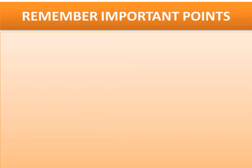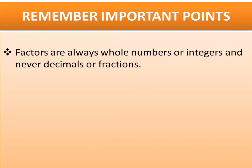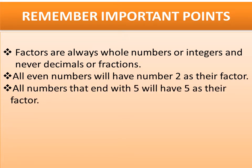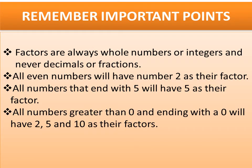You have to remember some important points to find the factors. Point 1: Factors are always whole numbers or integers, and never decimals or fractions. Point 2: All even numbers will have number 2 as their factor. Point 3: All numbers that end with 5 will have 5 as their factor. Point 4: All numbers greater than 0 and ending with a 0 will have 2, 5, and 10 as their factors.